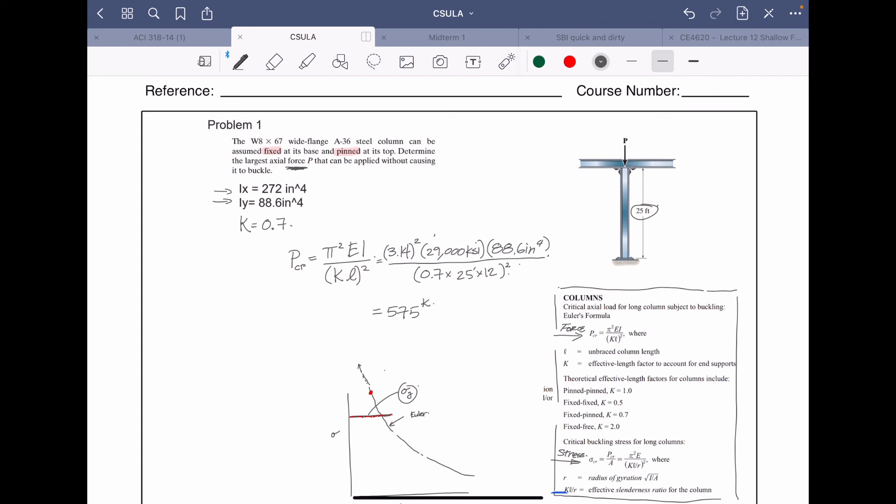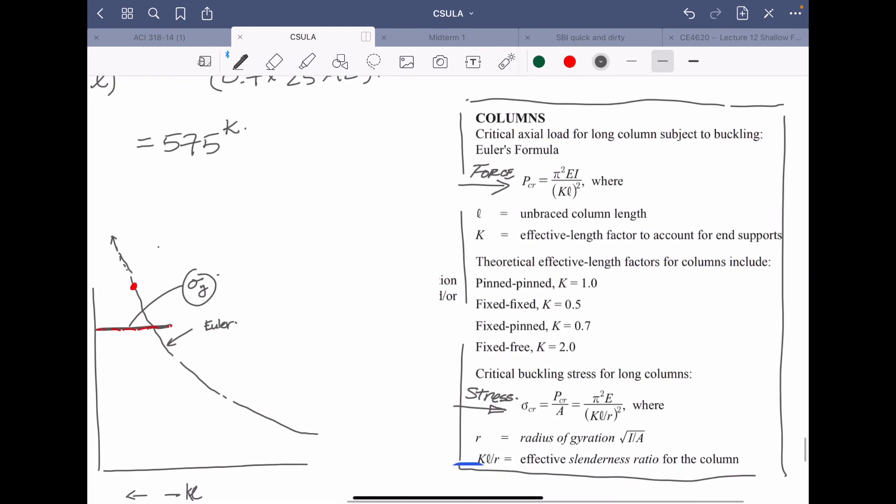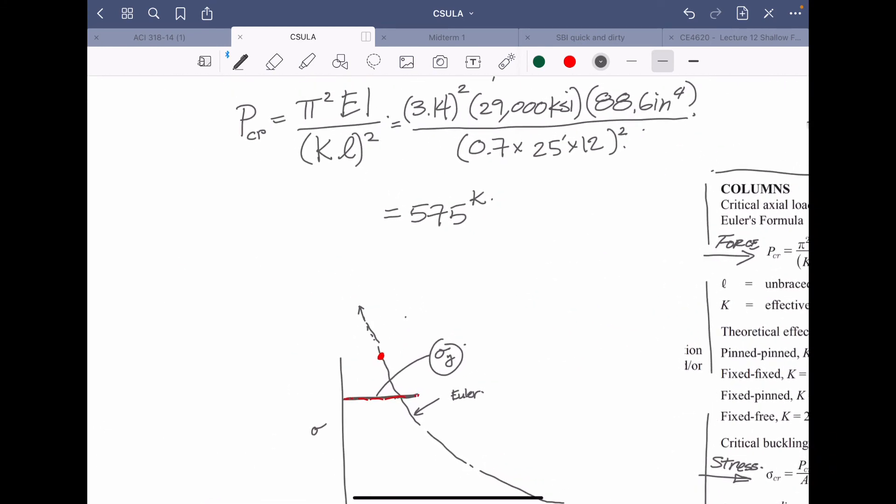But the alternate would be to actually calculate this using the sigma critical. So I would challenge you to actually use a stress critical to solve for it if you don't have the area. So that's the advantage of doing it using that format. But I'm going to cheat right now and say that the area is equal to 19.7 inch squared.